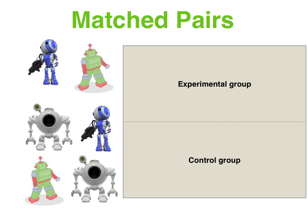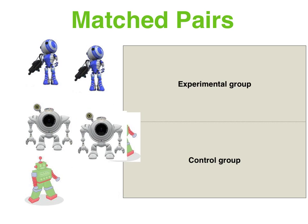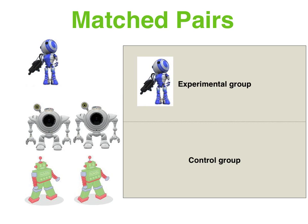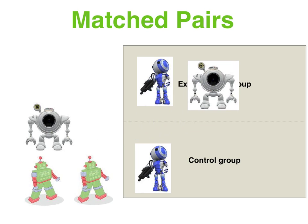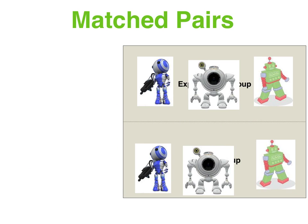In a matched pairs design, we pre-test subjects based on a characteristic of interest. The simplest way would be something like age and gender. If it had to do with memory, we could do a pre-test on short-term memory capacity, or even IQ tests, personality tests, etc. We pair subjects up based on shared characteristics of interest that will ultimately affect the results, and then a member from each pair is allocated to either the control or experimental condition, ensuring relatively equivalent groups.